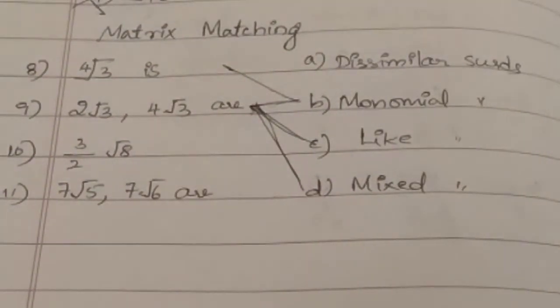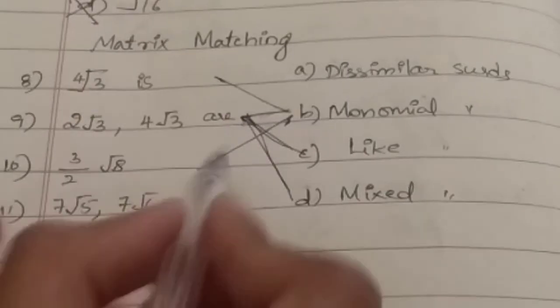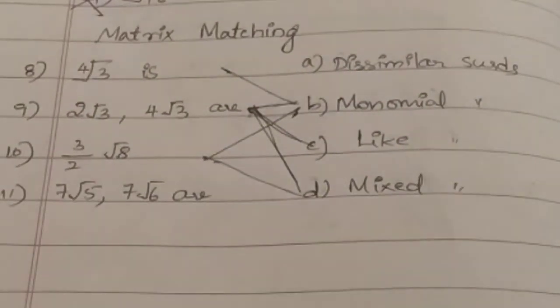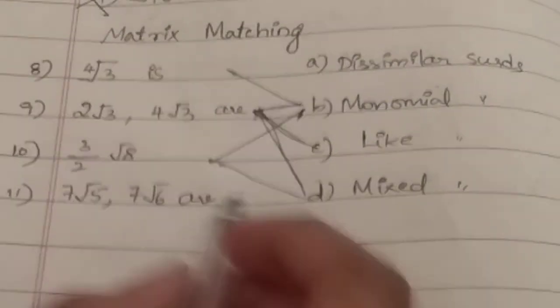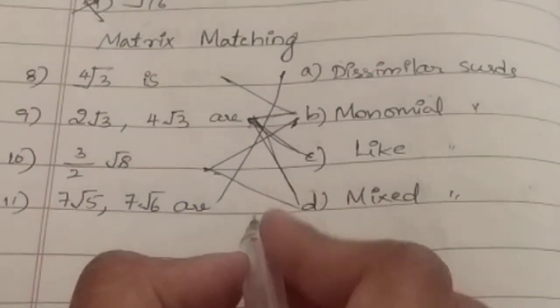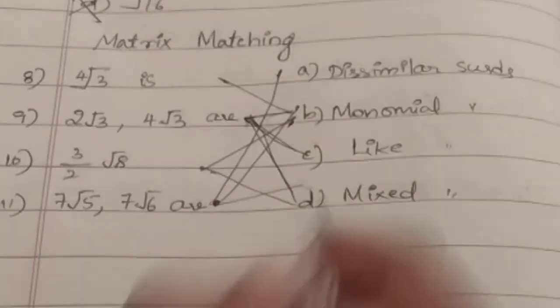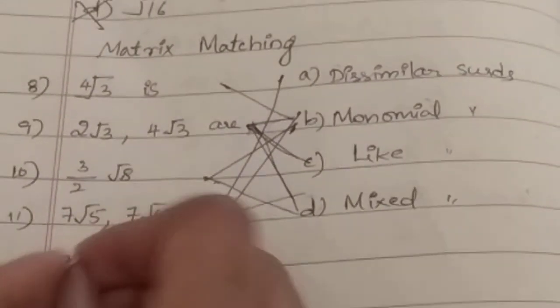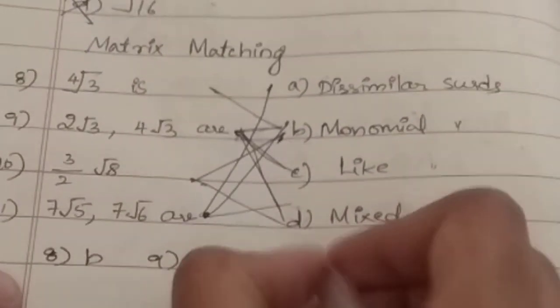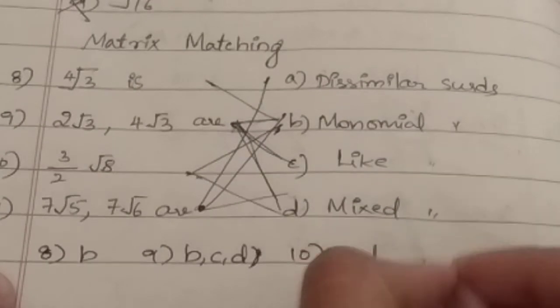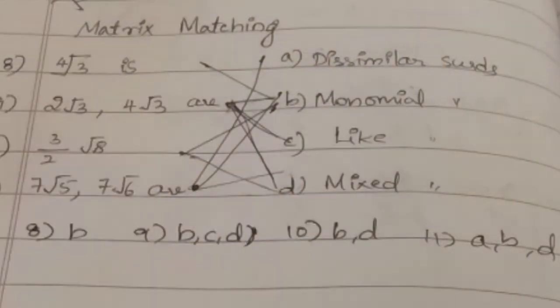2 root 3 and 4 root 3 are, what are they? They are like surds. And they are also monomial surds, and they are also mixed surds. 3 options are there for 9th one: B, C, and even D. Whereas for 8th one, there is only one option, B. 10th one, 3 by 2 root 8, what is it? It is a monomial surd and also a mixed surd. Next one is 7th root 5 and 7th root 6 are dissimilar surds. And they are monomial surds. They are also mixed surds. I'll write the options here. 8th one is B. 9th one is B, C, and D. 10th one is B and D. And 11th one is A, B, D. Now this would be clear for you. And matrix matching is done.